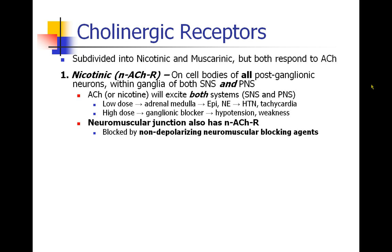At low doses, acetylcholine actually has its predominant effect at the adrenal medulla, and patients will secrete epinephrine and norepinephrine and have hypertension and tachycardia. But at higher doses, acetylcholine or nicotine will act as a ganglionic blocker and cause hypotension or weakness. We've also seen acetylcholine receptors in the neuromuscular junction — these are also nicotinic acetylcholine receptors, and therefore the nicotinic receptor can be blocked by non-depolarizing neuromuscular blocking agents.